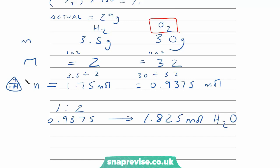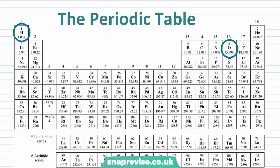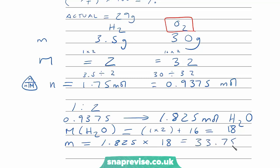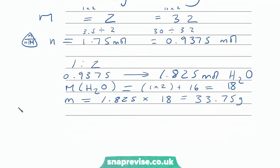Now, again, we're going to use mass = moles × molar mass. The molar mass of water, H₂O, is (1 × 2) + 16 = 18. So the expected mass is 1.875 × 18 = 33.75 grams. Substituting back into our percentage yield equation: actual (29) ÷ theoretical (33.75) × 100 gives us a percentage yield of 85.93%.